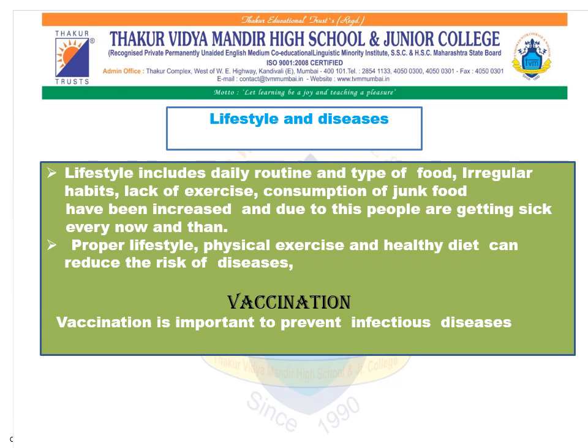Lastly, we are going to study about lifestyle and diseases, and vaccination. Lifestyle includes daily routine and type of food. Irregular habits, lack of exercise, and consumption of junk food have increased, and due to this, people are getting sick every now and then. If the frequency of becoming sick is to be lowered, people should follow a right lifestyle which must include sufficient sleep, right food, and physical exercise. Vaccination is important to prevent infectious diseases, and this vaccination should be given at the right age so that the diseases can be prevented — as we all know, prevention is better than cure. Thank you.